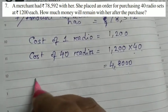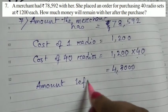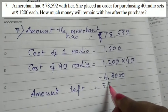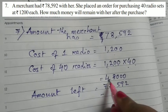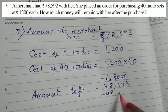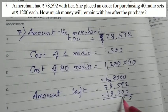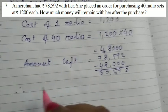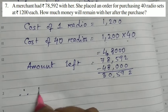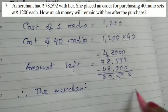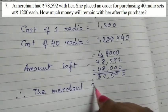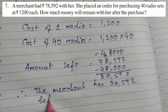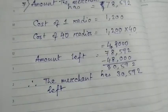Now the question is what is the amount left? What is the amount left with the merchant? How much money will remain with her after the purchase? That is equal to 78,592 minus 48,000. I will minus it, 30,592, right? Therefore, the merchant has 30,592 left. That is question number 7.